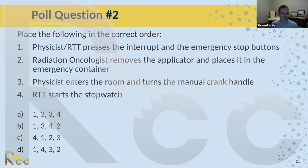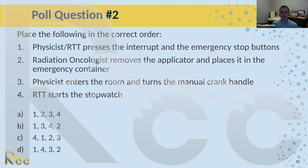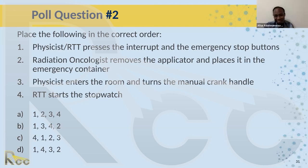Poll question two: place the following in the correct order for an emergency situation — A: physicist or radiation therapist presses interrupt and emergency stop button; B: radiation oncologist removes the applicator and places it in the emergency container; C: physicist enters the room and turns the crank; D: radiation therapist or nurse starts the stopwatch. Think about what order these things would happen in an emergency response.